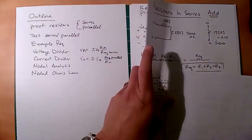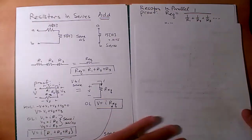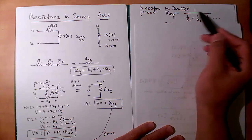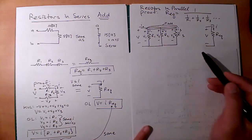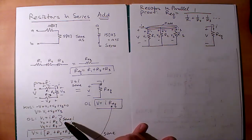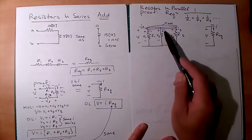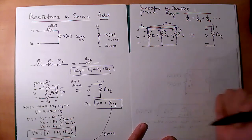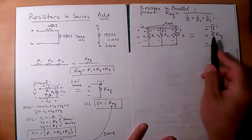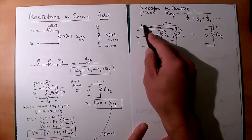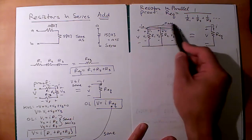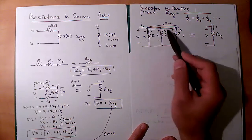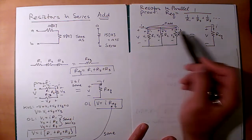Now let's look at parallel. The parallel equivalent resistance is found by adding the reciprocals. Same idea for the proof: we have a complicated system with multiple resistors in parallel that we want to represent as one resistor. Notice we have the same voltage V on the outside, the same current I entering, and we treat the top and bottom as nodes. We can use KCL and Ohm's law for the three different resistors.